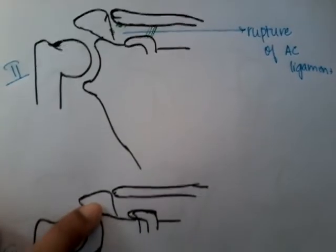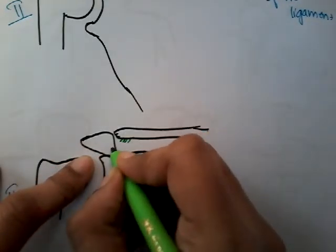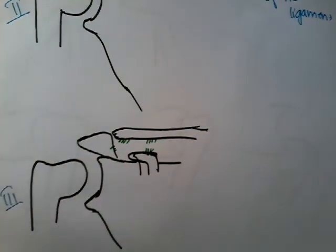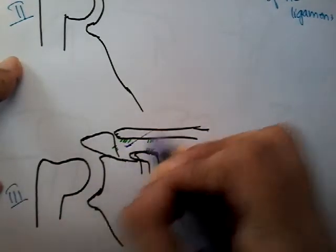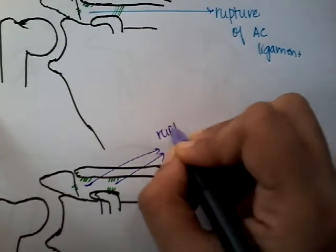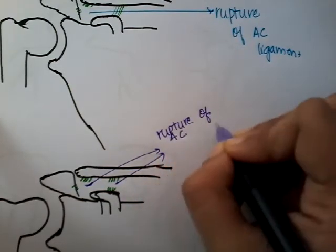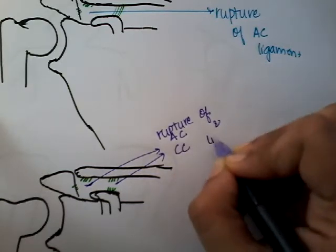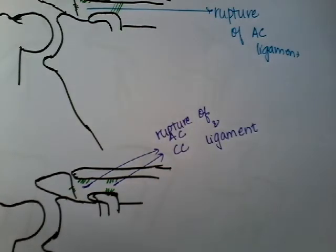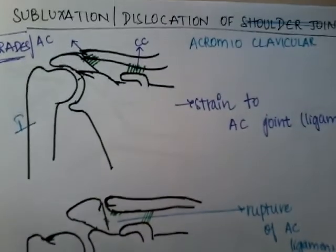In grade 3, there is rupture of both the acromioclavicular ligament and the coracoclavicular ligament. CC stands for coracoclavicular and AC stands for acromioclavicular. These are the three grades of subluxation and dislocation of the acromioclavicular joint.